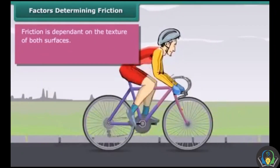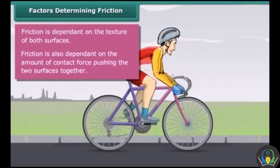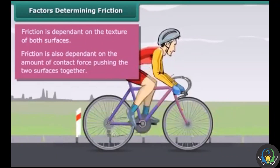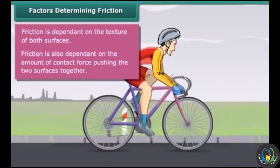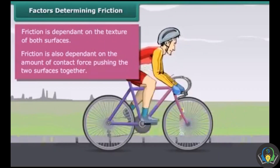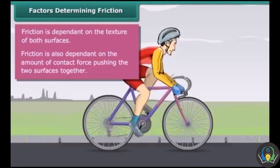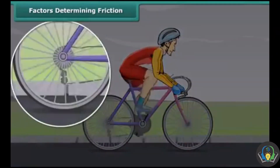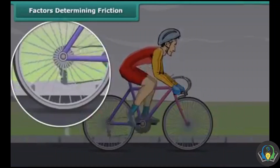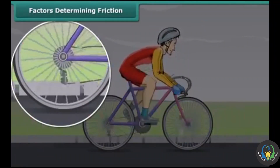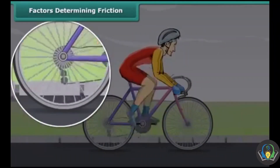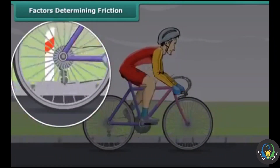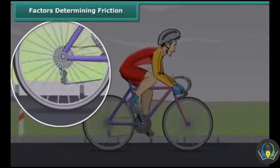Friction is dependent on the texture of both surfaces. Friction is also dependent on the amount of contact pushing the two surfaces together. While in motion, the tires of the bicycle are rubbing against the surface of the road.